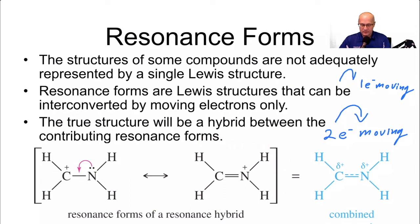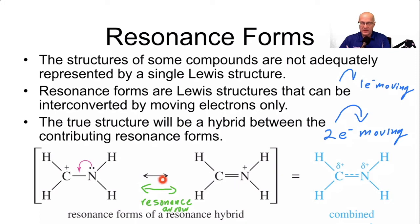Notice this arrow here that has a double head on the right and a double head on the left — this is called a resonance arrow. It tells the reader that what's coming after it is a resonance form of what came before it. So when you have two resonance forms, you have to put this arrow in between them to tell the reader that these two things are resonance forms of each other.